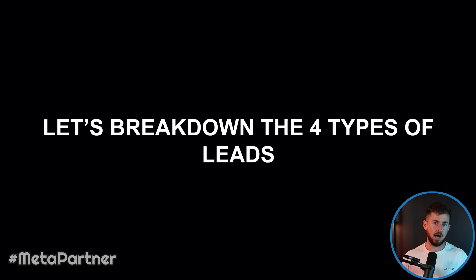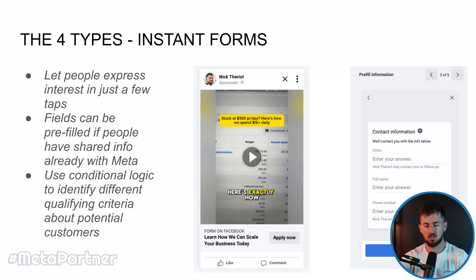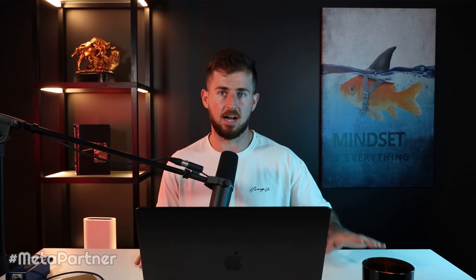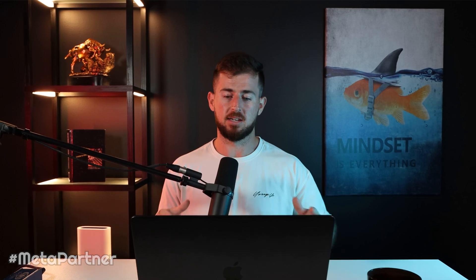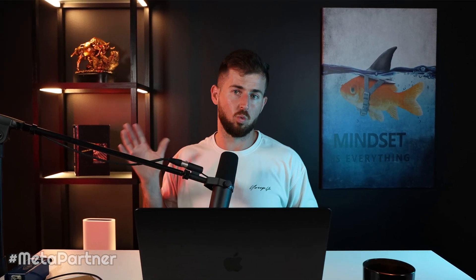Now I want to break down the four types of lead ads you can run on Meta. Number one is Instant Forms — probably the most popular and commonly seen. These are great because they make it easy for people to fill out their information. They also allow you to use conditional logic, which we'll cover in this video. Conditional logic is really powerful because it lets you sort out unqualified leads from qualified ones, giving you a better sales conversion rate.